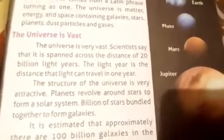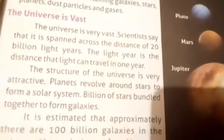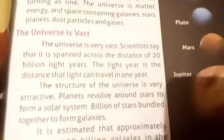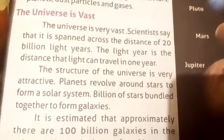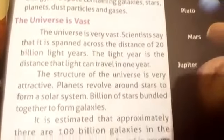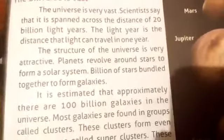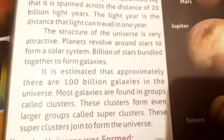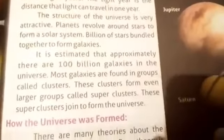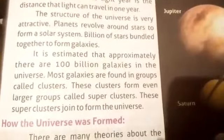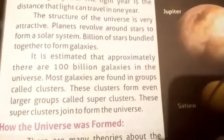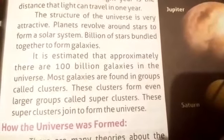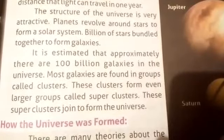The universe is vast. Scientists say that it is spanned across the distance of 20 billion light years. A light year is the distance that light can travel in one year. The structure of the universe is very attractive. Planets revolve around stars to form a solar system. Billions of stars bundled together form a galaxy.